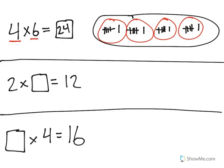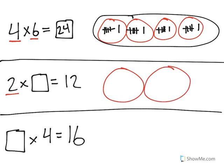Next, I have 2 times blank equals 12. That means I have 2 groups with a certain amount in each group. I don't know how many — all I know is that it will be the same number in both groups, to equal 12.